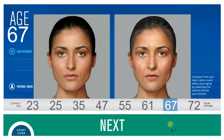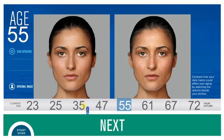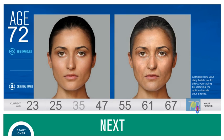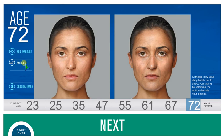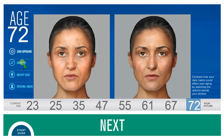The user can move back and forth along the timeline by selecting various ages. Using the buttons on the left, the user can see in the left panel the effects of smoking, weight gain and excess sun at various ages, compared to normal aging on the right. Once this step is complete, press next.